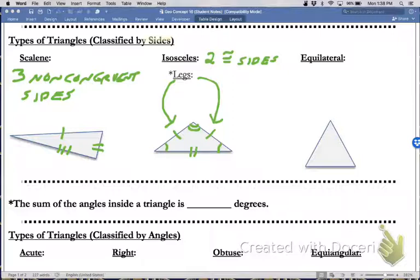Equilateral triangles have all sides congruent, which means they're all marked off the same, which means all the angles are the same as well. So to classify a triangle by its sides, it can be called scalene, isosceles, or equilateral.